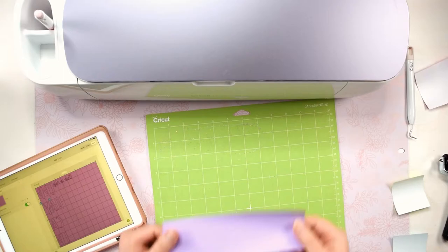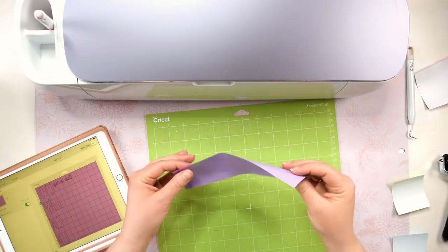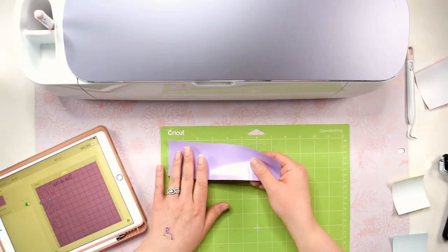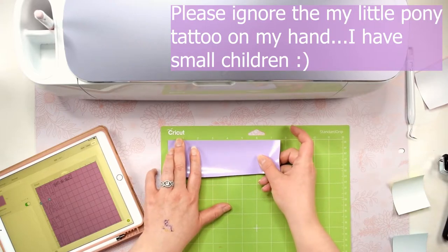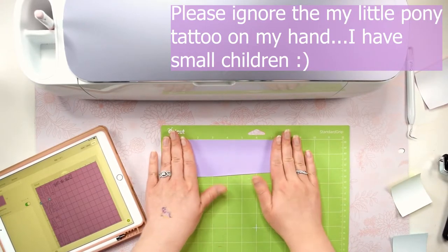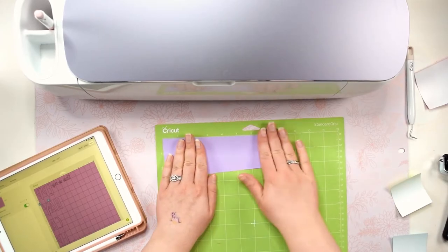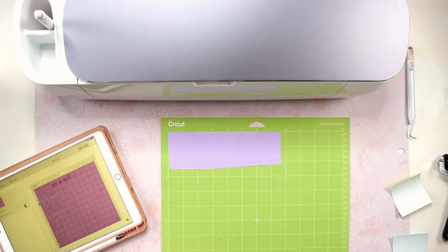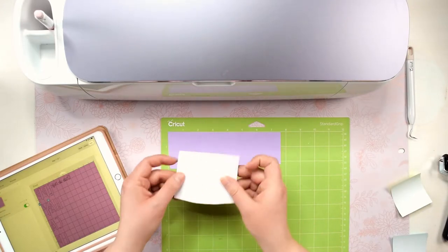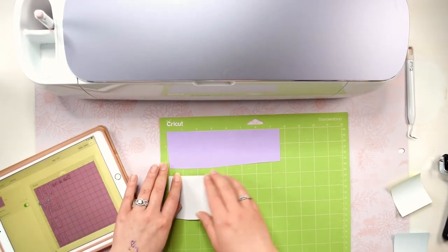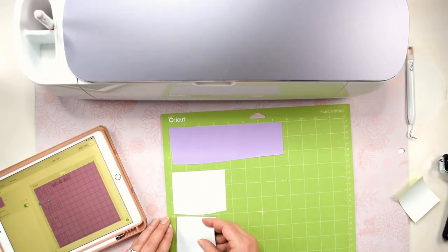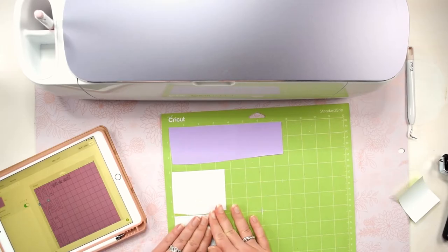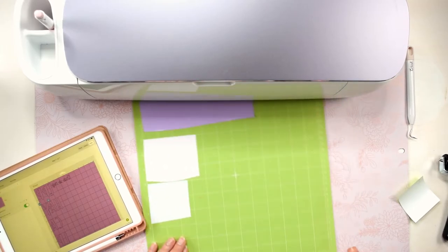Now we're going to place the HTV on the mat. You want to make sure that the HTV is placed shiny side down. Starting at the top we will place the purple HTV on the mat. Next is our pink layer. The brand of HTV I'm using is a little strange in that the back of some of the sheets are white. Normally both sides are the same color like you see with the purple vinyl here. But no matter what brand of HTV you use, you always want to make sure the shiny side is down. Then we will line up our blue vinyl and lastly the green.